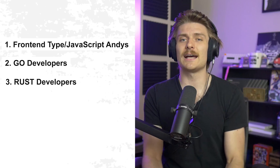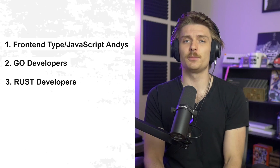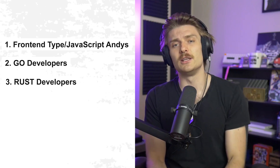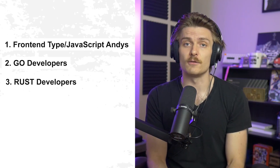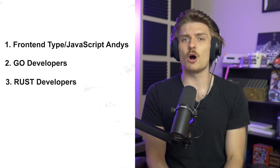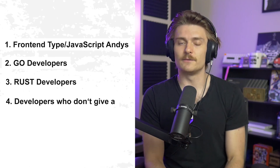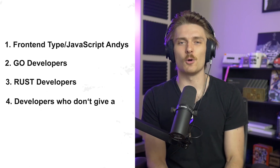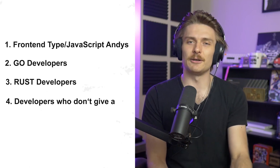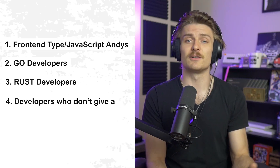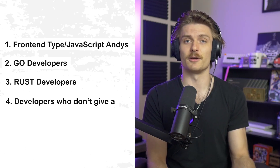The third category are the classic Rust developers who, regardless of what the council says, stay true to the language and their love for it. And in the last category, these are developers who don't care — they use Java, PHP, COBOL, C — they don't care. They use what they need for the job, collect their paycheck, and life is simple for them.